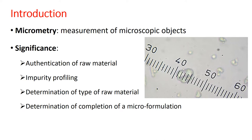Micrometry also helps us determine the type of raw material. For example, starch is present in almost all plants and is commercially required as a binding agent, disintegrating agent, sweat absorbent in surgical gloves, bulk-forming agent, and gliding agent. There are four kinds of starch normally used commercially: maize starch, rice starch, wheat starch, and potato starch.